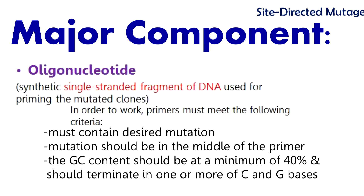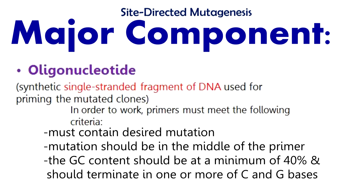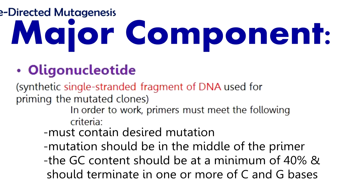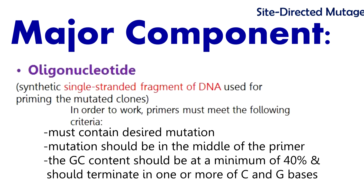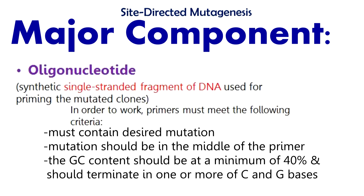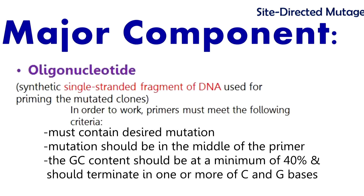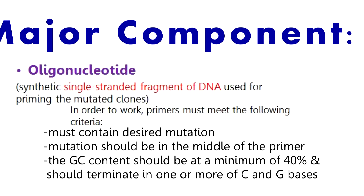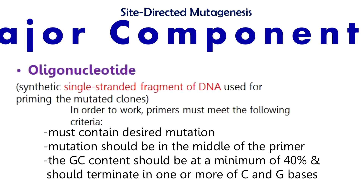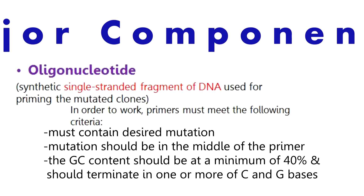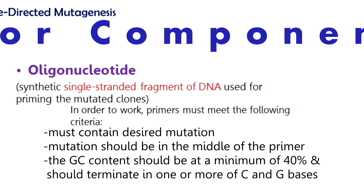There are several criteria for oligonucleotide primers to be fulfilled for mutagenesis to occur. Firstly, the oligonucleotide must contain the desired mutation in the middle of the primer. Also, the GC content of the primer should be at a minimum of 40%. However, the GC content of the designed primer cannot be too high, because it will cause the melting temperature to increase.